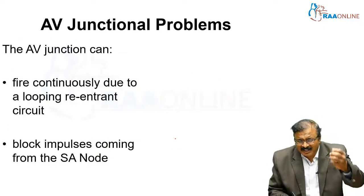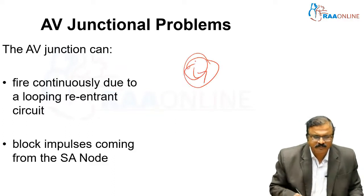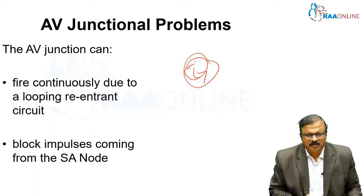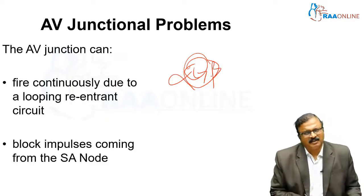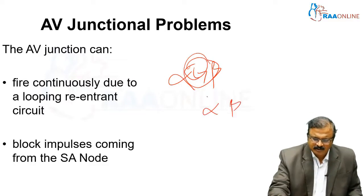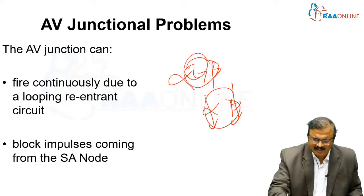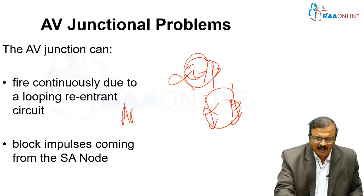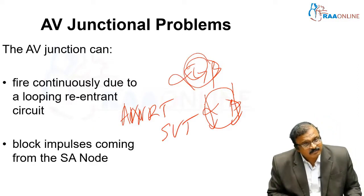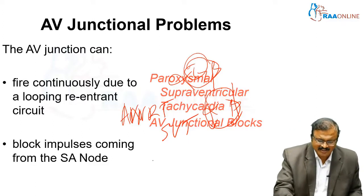For junctional problems, if there is a re-entrant circuit — re-entry phenomenon within the AV node — there is an alpha pathway and a beta pathway, a slow pathway and a fast pathway. Re-entry through this pathway produces AVNRT, otherwise called supraventricular tachycardia. Or the impulses are blocked, producing AV-junctional block.